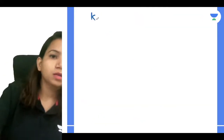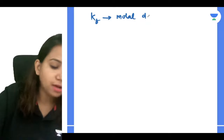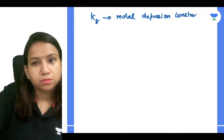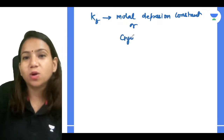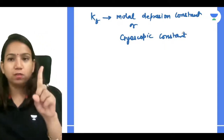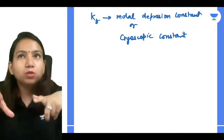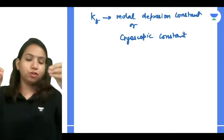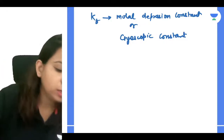Kf is called the Molal Depression Constant or Cryoscopic Constant. Just like Kb for elevation in boiling point was called the Ebullioscopic Constant, for Kf we use the name Cryoscopic Constant. So: molal depression constant or cryoscopic constant — very simple.